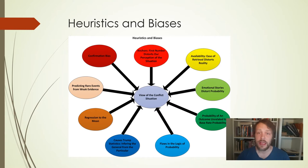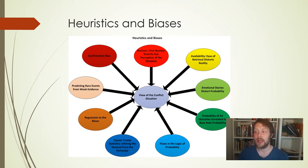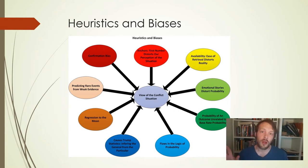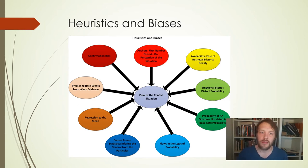To talk about a few of the heuristics and biases - one I'll highlight is the availability bias. The salience of a memory can mean that memory is easier to retrieve and easier to recall, and we often base our estimates of prevalence on the ability to recall something from memory. For example, if you were to watch a particularly horrible news article about a plane crash and then somebody asked you how likely planes are to crash, your ability to recall that salient event would probably make you think crashes are more prevalent than they actually are.